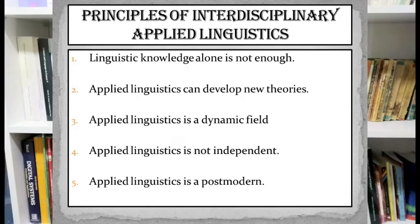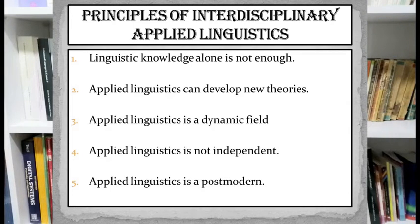Third, it assumes that applied linguistics is a dynamic field that is always ready to accommodate new changes and challenges, and thus its scope is continuously growing. The fourth principle is that interdisciplinary applied linguistics cannot be independent because it always works with other fields and disciplines. The last principle states that interdisciplinary applied linguistics presents itself as a postmodern discipline that does not have a fixed method or structure of research.